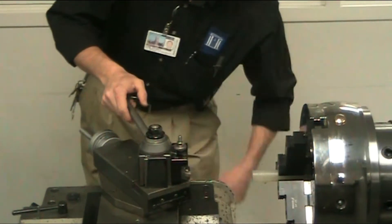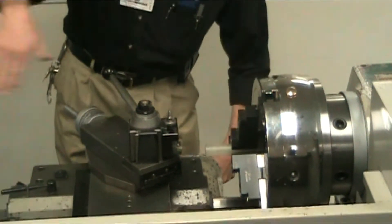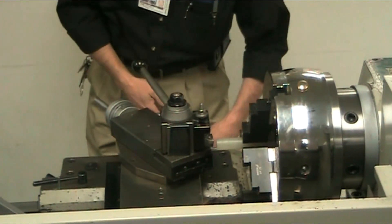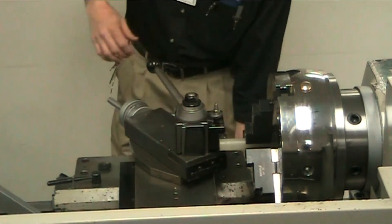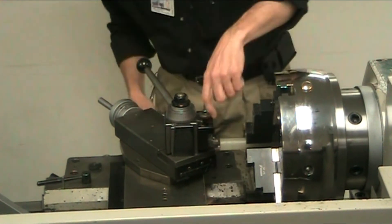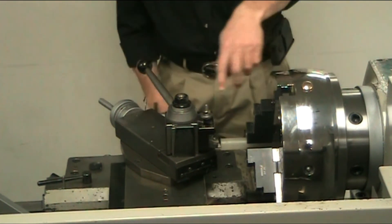Tighten up your tool post holder and you move your z-axis over, and you can either turn the OD using your z-axis or you can face off the end of your part using your x-axis.